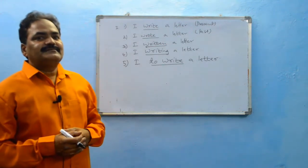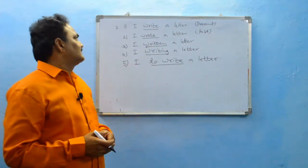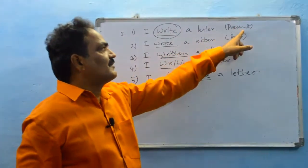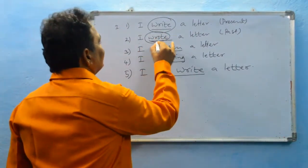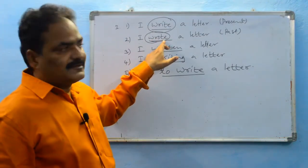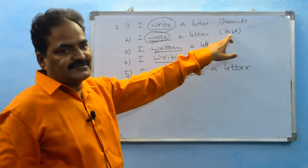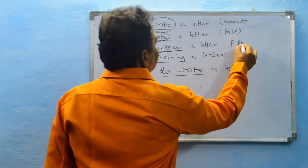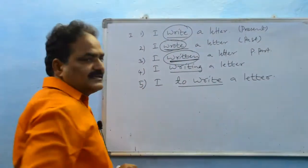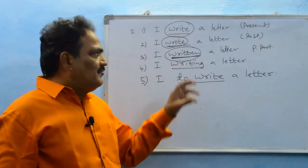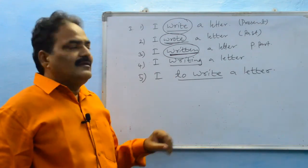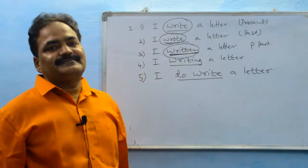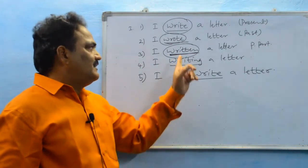Now we observe these examples and try to understand. The first one: 'I write a letter' — write, the main verb, is in present form. 'I wrote a letter' — wrote is in past form, so this sentence is in past tense. And 'I written a letter' — written is the past participle form, but we can't make complete sense by this construction. Written is not giving complete meaning like 'I write a letter' or 'I wrote a letter'. Something is missing — there is incomplete meaning.